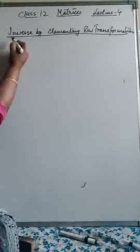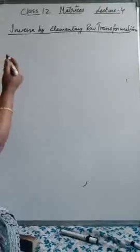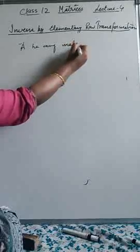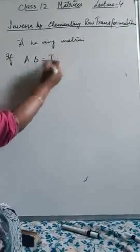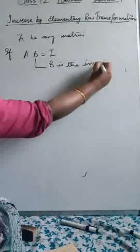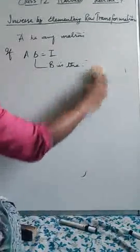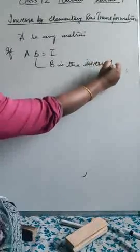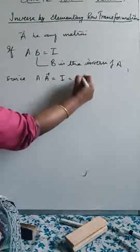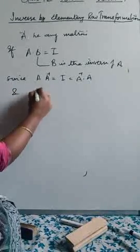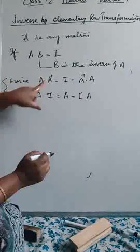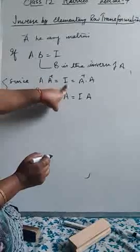Hey students, today we will learn how to find the inverse by elementary row transformation of matrices. First of all, let A be any matrix. If A into B equals I, then we can say B is the inverse of A. The inverse is the element when you operate it to any other element, you get the identity element.